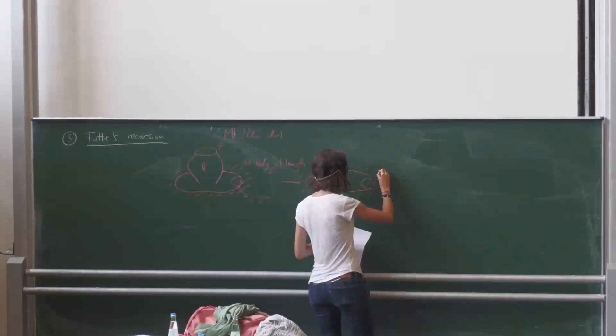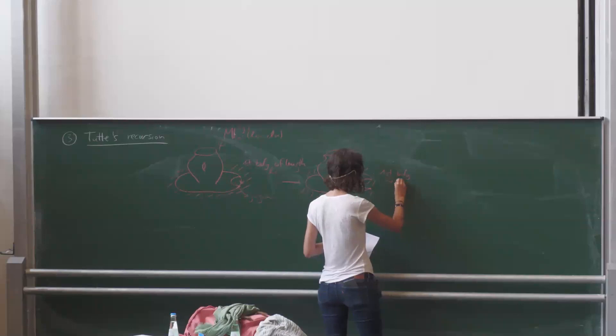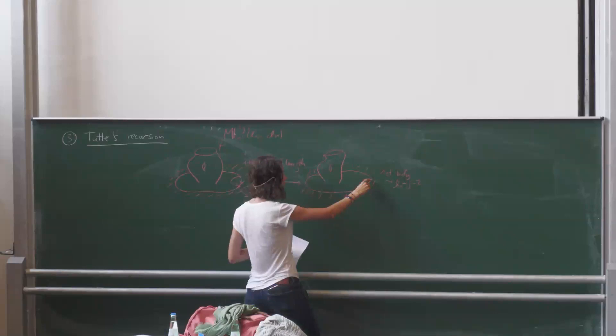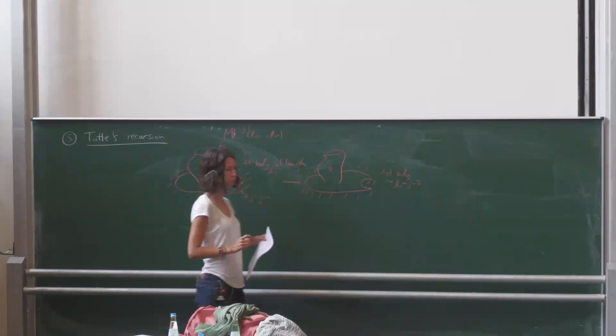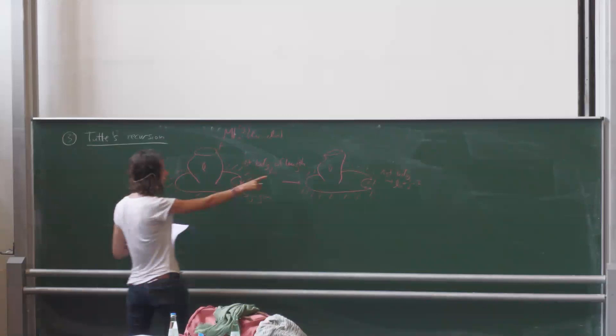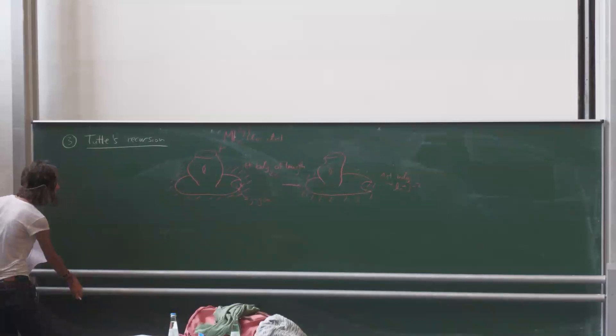The first boundary now has length l1 plus j minus two. So it has length l1 plus j but we have removed this one that was counted twice, hence minus two. Now we have to translate this type of thing to the generating series. We're going to see all the possibilities that we get on that side and establish these bijections that give us the recursion we want.